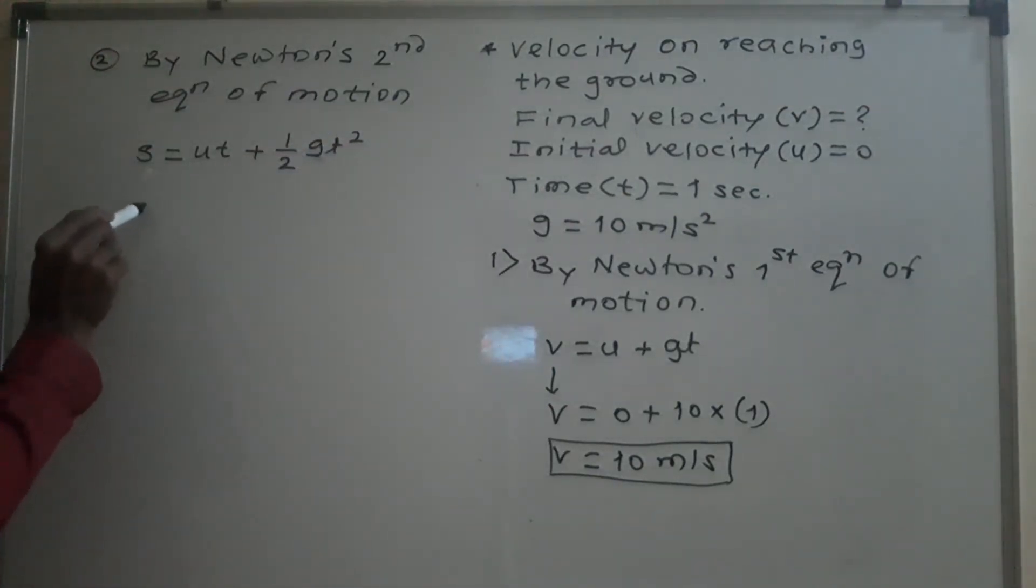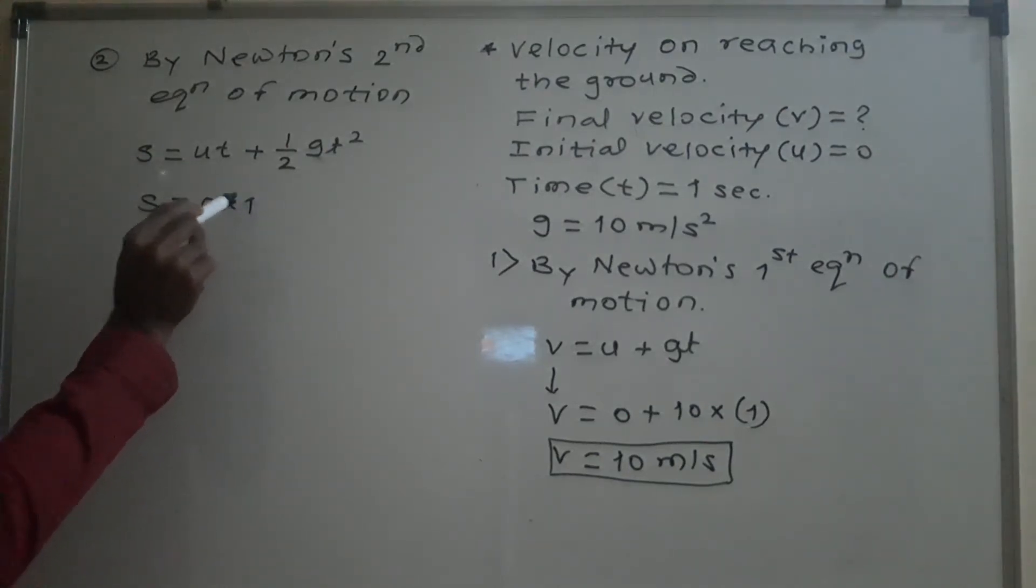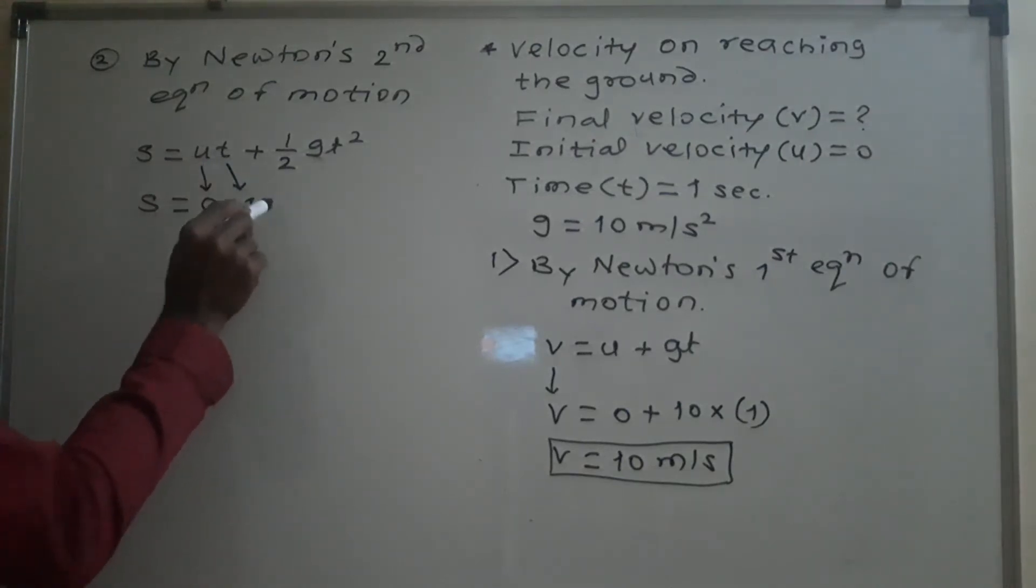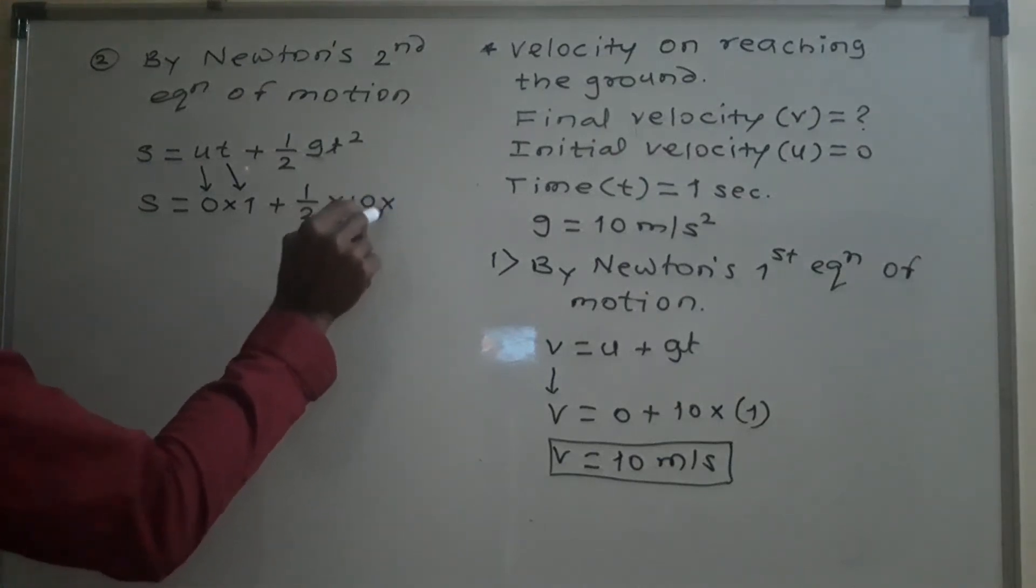Now, we put values. s is equal to u into, u value of u is 0, t is 1 second, plus 1 upon 2 into 10 into 1 square.